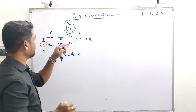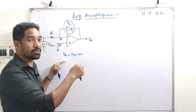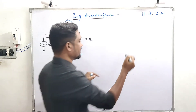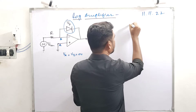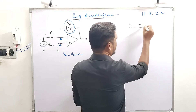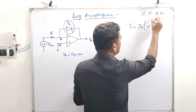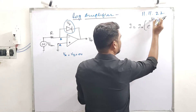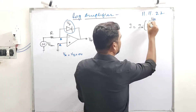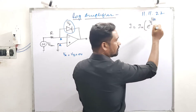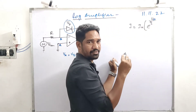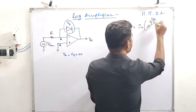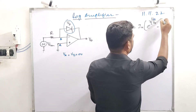Definitely we have to understand this derivation — the diode current equation is a prerequisite. What is that equation? Current through the diode I is equal to I0 (reverse saturation current) multiplied by e raised to VD over Nη·VT, where VD is the voltage across the diode. For silicon, η equals 2, and for germanium, η equals 1.